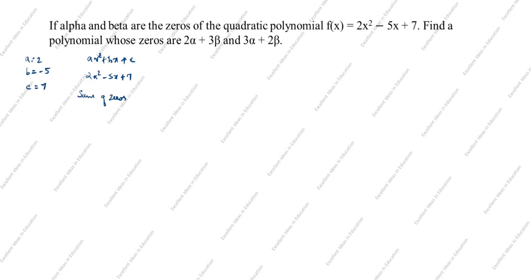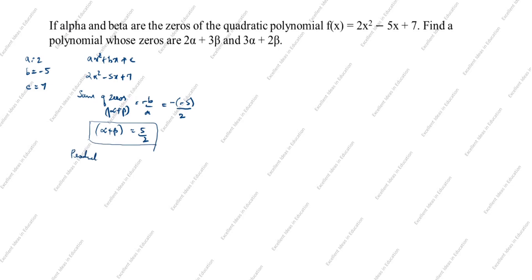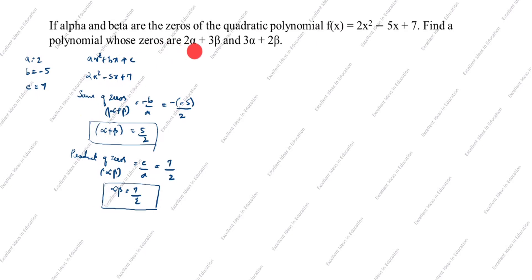The sum of zeros: α + β = -b/a. Here b = -5, so minus of -5 divided by a = 2, giving α + β = 5/2. Next, the product of zeros: αβ = c/a. Here c = 7 and a = 2, so αβ = 7/2.